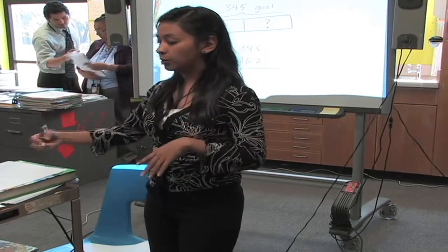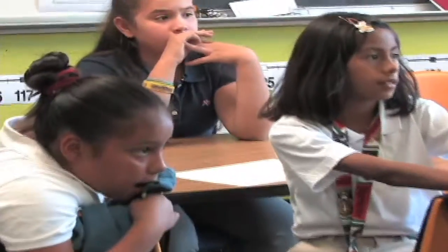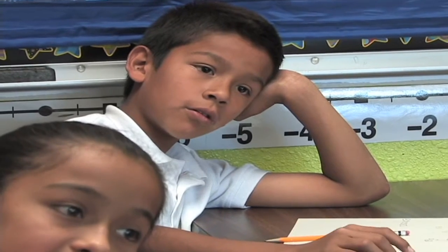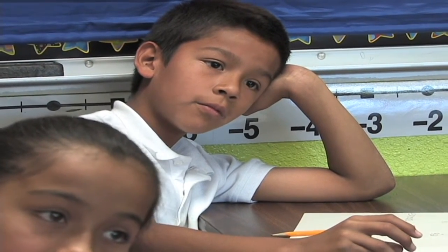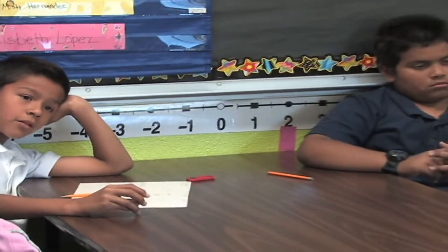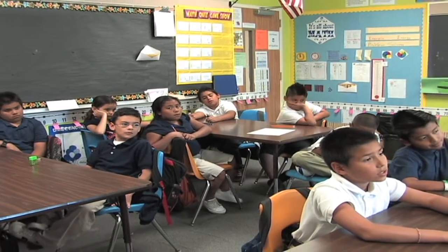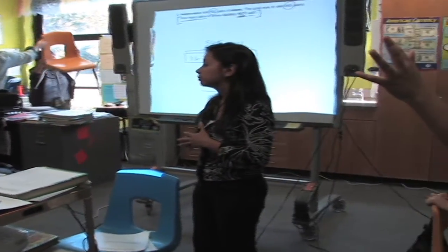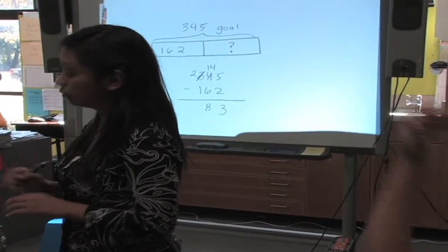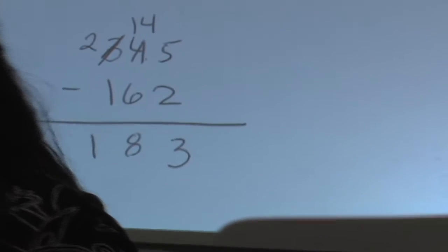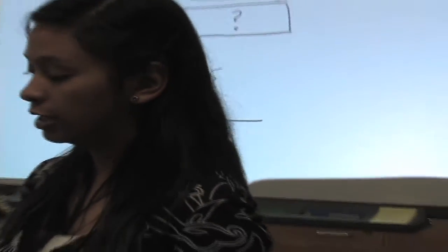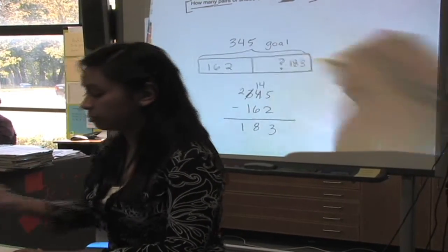Can people help me solve this problem? Juliana, start with the ones. 5 minus 2 equals 3. Alexander, how do we go to the tens? You cannot subtract 4 minus 6, so you go to the hundreds and borrow. We're going to borrow from the hundreds place. It turns to a 2, and the tens turn into 14. So 14 minus 6 is 8. And what happens to the hundreds place? 1. So it's 183. The number of pairs of shoes they did not sell was 183. That question mark becomes 183.